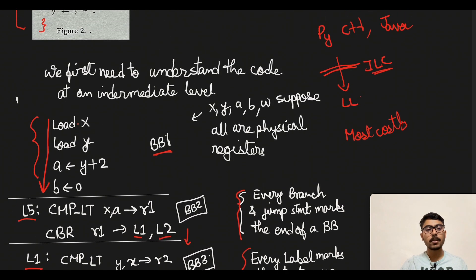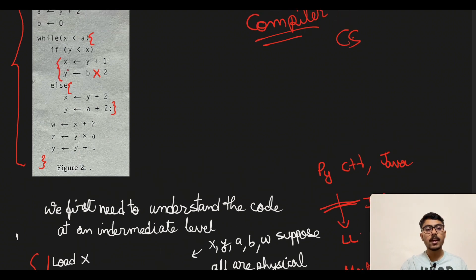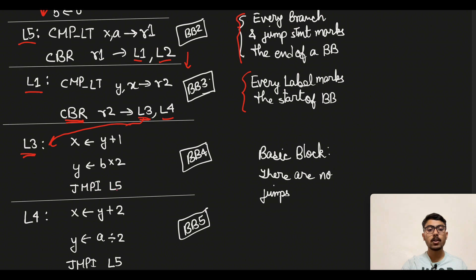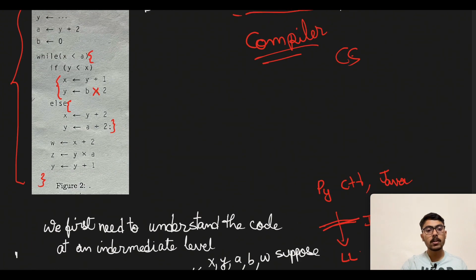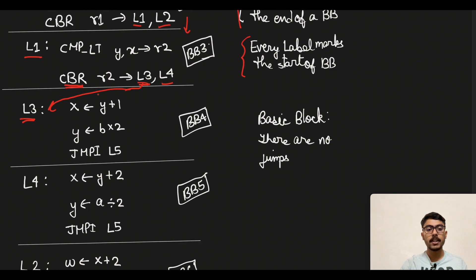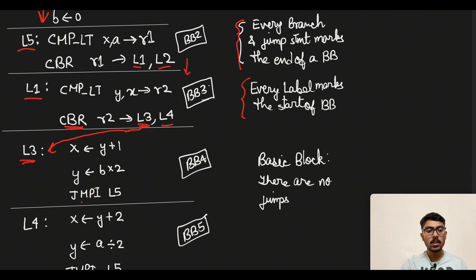After BB3 we come to the L3 part, which stands for the case when the if branch is executed. When we go to L3 we have y plus 1 into x, and b multiplied by 2 into y. Then we have a jump immediate to L5. This jump immediate command is needed because after executing the if branch, we must skip over the else statement and jump directly to L5.